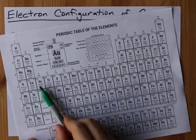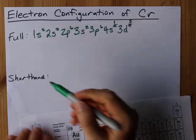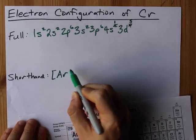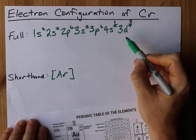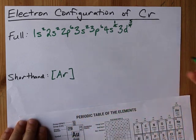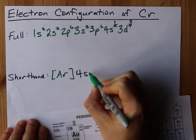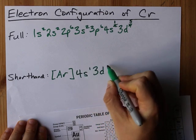That means that the shorthand, if we go back to the previous noble gas, is argon. And instead of it being 4s2 3d4, you have to write down that it is 4s1 3d5.